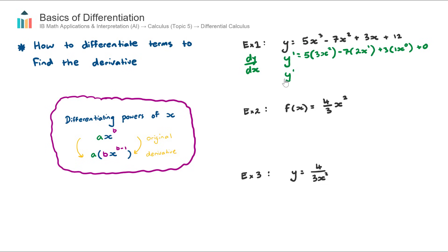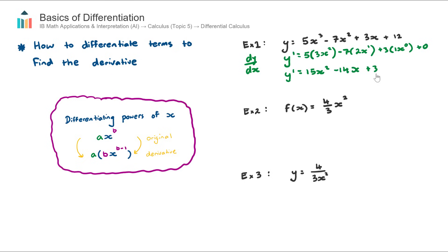Now let's clean it up. y-dash equals: the first term — five times three is 15, so 15x². The second term — negative seven multiplied by two gives negative 14, and x to the power of one is just x, so minus 14x. The third term — x to the power of zero equals one, so three times one is just plus three. We don't need the zero, so the final derivative is y-dash = 15x² − 14x + 3.